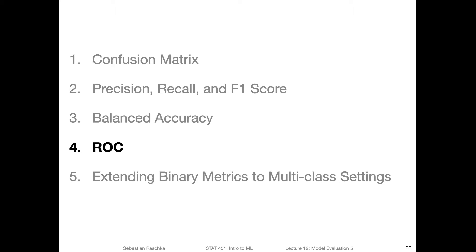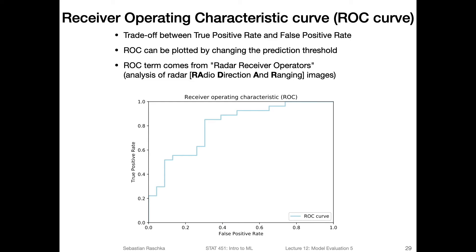Let's talk about the receiver operating characteristic curve, also known as the ROC curve. The term comes from the context of radar receiver operators observing radar — radio direction and ranging technology. It was used in that context, but it became popular in machine learning because it combines both the true positive rate and the false positive rate.